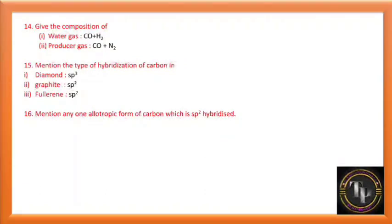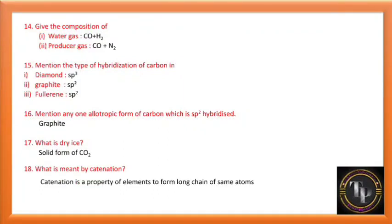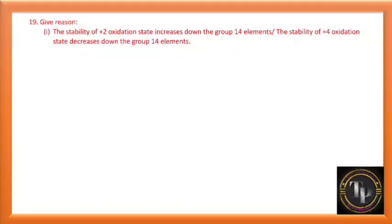Mention any one allotropic form of carbon which is sp2 hybridized — graphite or fullerene. What is dry ice? Dry ice is the solid form of CO2. What is meant by catenation? Catenation is a property of an element to form long chains of the same atoms. The stability of the +2 oxidation state increases down group 14, while stability of the +4 oxidation state decreases — due to the inert pair effect.